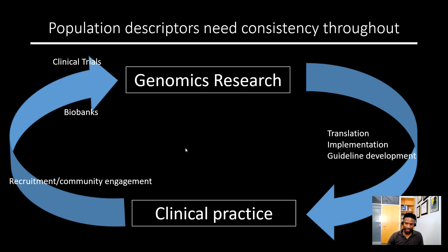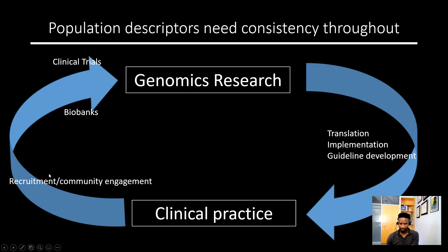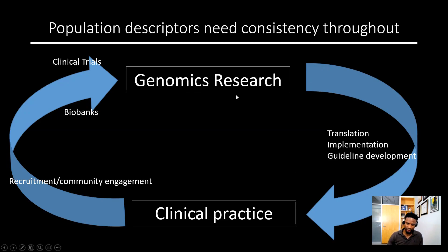This brings me to my next point: descriptors need to be applicable, in my perspective, to the full spectrum of the research process. The purpose of genomics research — at least the research I do — is to advance human health. We can't have certain descriptors in research but then resort to an entirely different set of descriptors when it's time to recruit participants. That pretty much defeats the purpose. We also need a sense of generalizability when it comes to patient care. We can't discuss population descriptors for genomics research in a vacuum.